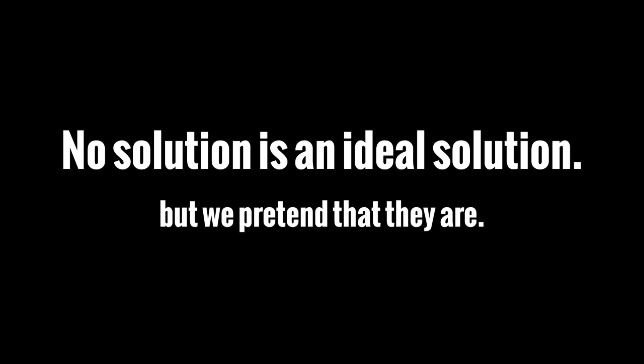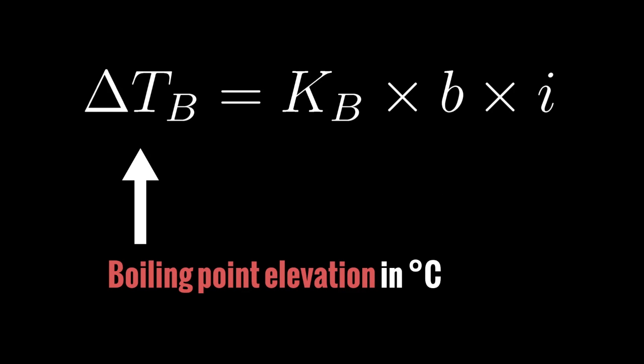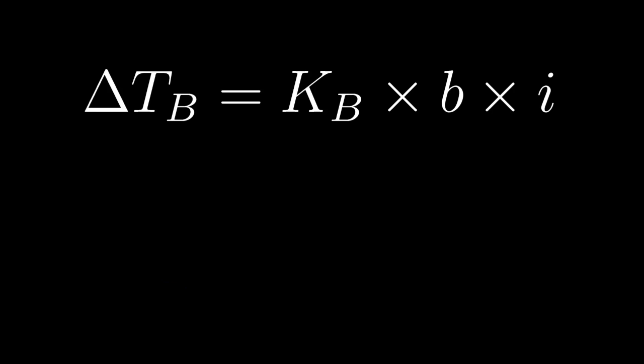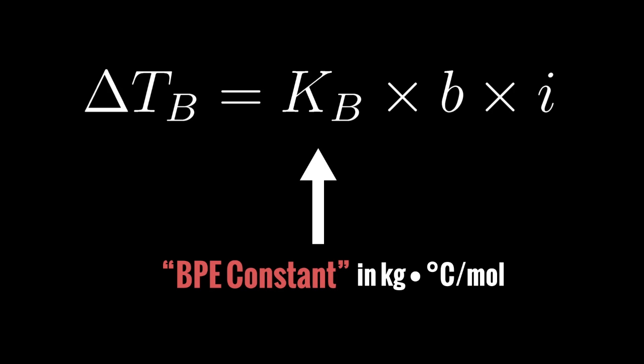If we consider that all solutions are ideal solutions, you get this equation right here, and this equation is what tells us the Boiling Point Elevation. Delta T sub B is the Boiling Point Elevation in degrees Celsius — that's just the amount that the Boiling Point will increase. Then we have K sub B, which is the ebullioscopic constant in kilograms degrees Celsius per mole. Since that word is a mouthful, I'm just going to call it the BPE constant, or Boiling Point Elevation constant, measured in kilograms degrees Celsius per mole.